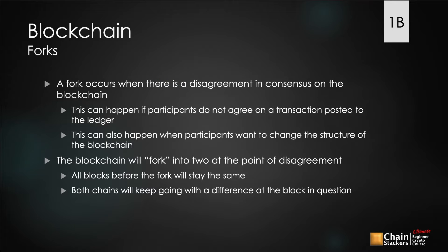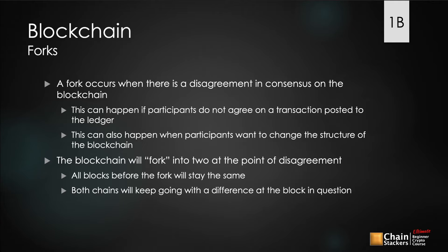Lesson 1b: blockchain forks. A fork occurs when there is a disagreement in consensus on the blockchain. This can happen if participants do not agree on a transaction posted to the ledger. For example, there are times on blockchains where miners mine a block at the exact same time, and it's up to the network to decide which block is correct. When you look at a fork, it's almost like a fork in the road — you have one singular blockchain that then splits into two different directions.